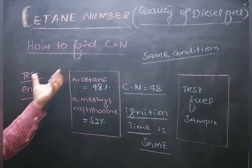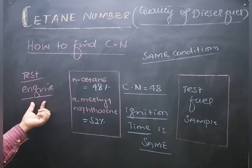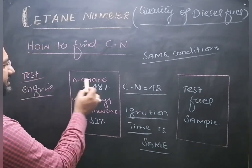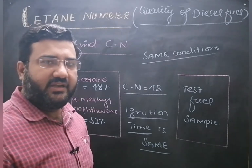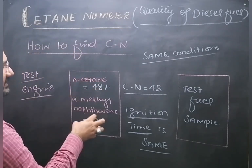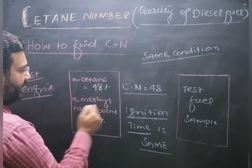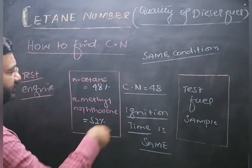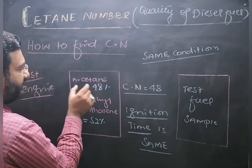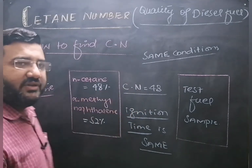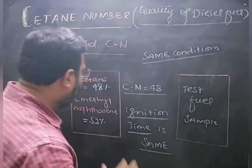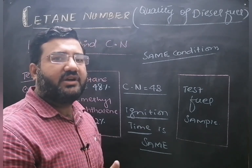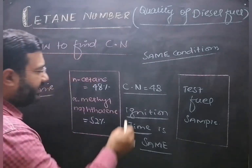In order to determine the cetane number, we use a test engine in which reference fuel is used. The reference fuel is actually a mixture of normal cetane and alpha-methyl naphthalene. Suppose that in this reference fuel, normal cetane is 48% and alpha-methyl naphthalene is 52%; the percentage of normal cetane in the reference fuel — that is 48% — is actually its cetane number. This reference fuel is ignited in the test engine and its ignition time is noted.